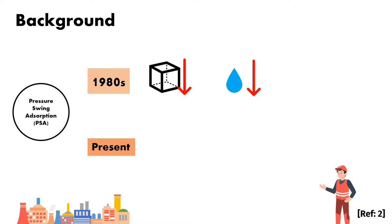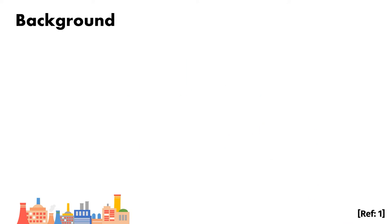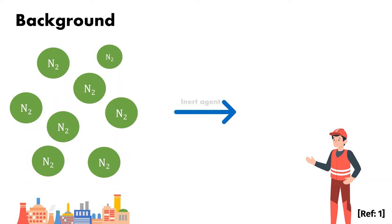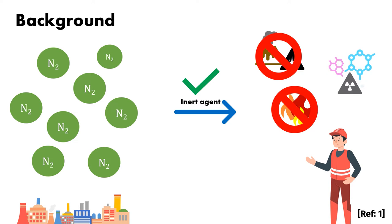At present, PSA is versatile as they are capable of being used for a variety of volumes, purity requirements, and usage patterns. The nitrogen produced can be used as an inert agent for explosion prevention, fire prevention, and chemical blanketing.